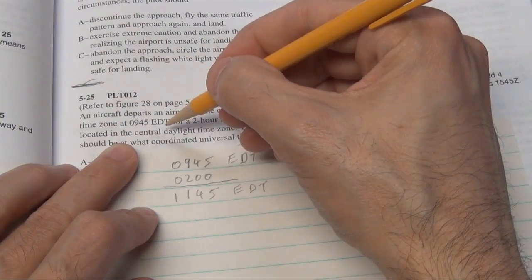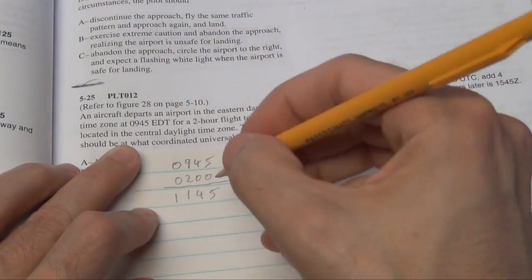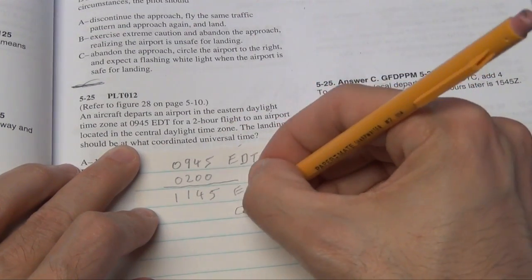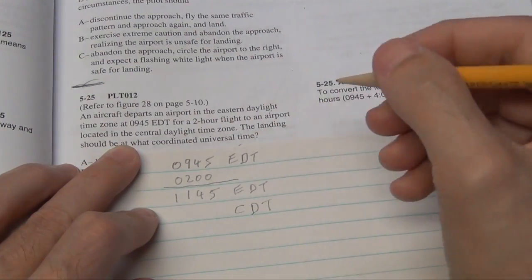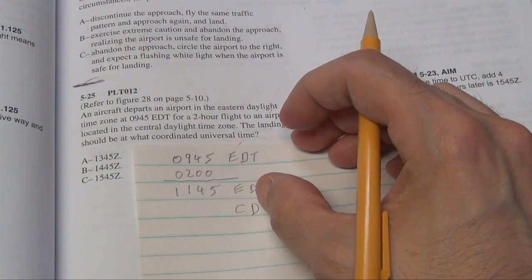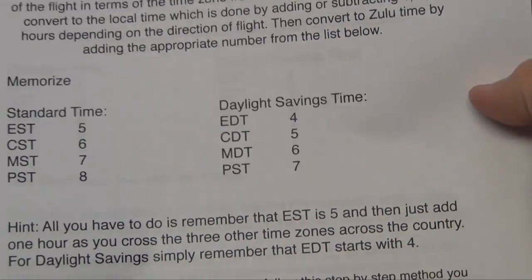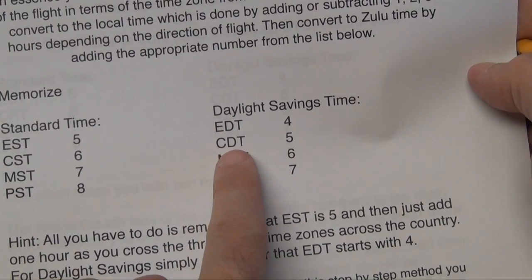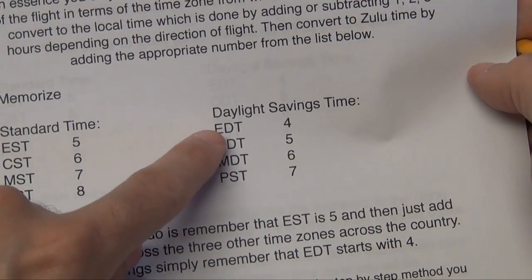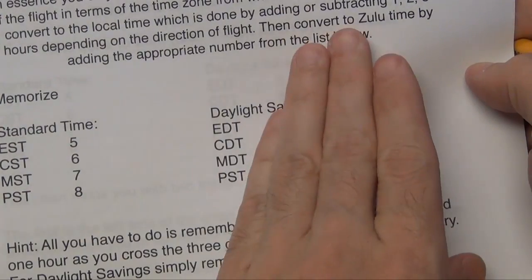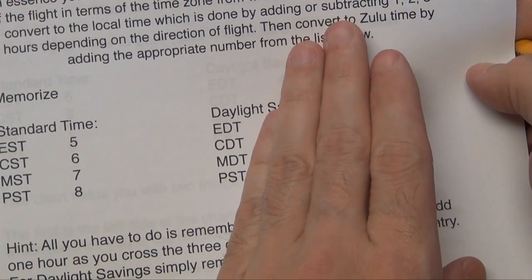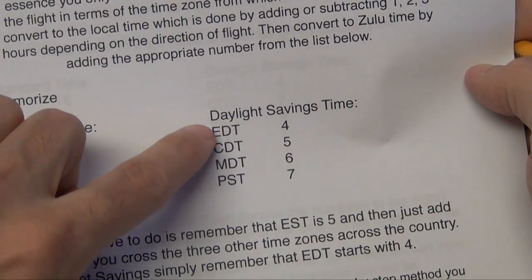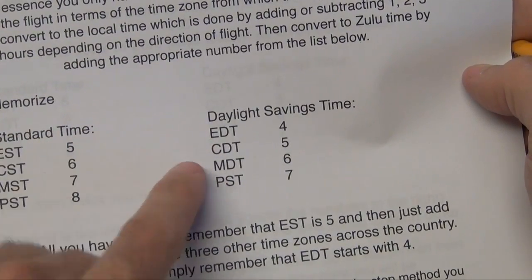He flew to an airport located in the Central Daylight Time Zone, so we need to convert Eastern Daylight Time to Central Daylight Time — write that down so you don't forget. We go to our chart. Under Daylight Savings Time, it shows Central Daylight Time and Eastern Daylight Time. Forget about the numbers to the right — those are only for converting to Zulu Time. Right now we just want to convert Eastern Daylight to Central Daylight. Since they're right next to each other, they're only one hour apart.